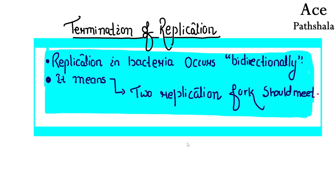In E. coli, the bacteria, replication is bi-directional. The DNA of E. coli is a circular DNA. From the origin of replication (ORI C), replication proceeds bi-directionally in both directions. The replication fork will go until it meets the other fork coming from the opposite direction. At this particular point, where both replication forks meet, replication is necessary to stop. This is why we call this particular process termination of replication.